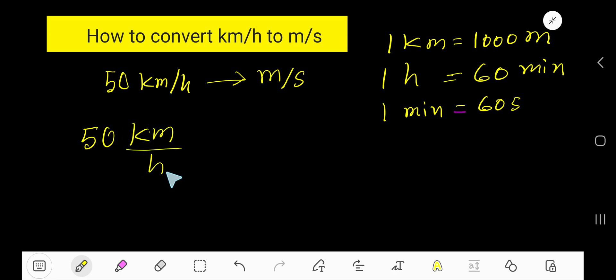So look, we'll convert kilometer to meter and hour to second. So we'll use this conversion equation to convert this kilometer to our meter per second. Okay, so we need to convert kilometer to meter. So this is our conversion equation: one kilometer equal to 1000 meter.